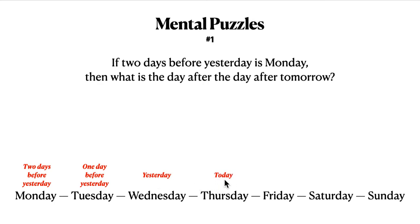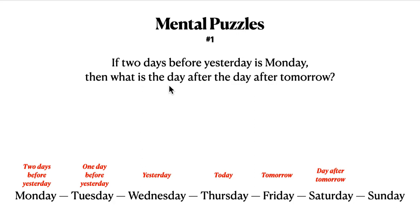Since Wednesday is yesterday, Thursday is today. Tomorrow will be Friday. The day after tomorrow is Saturday. And then lastly, the day after the day after tomorrow is Sunday.